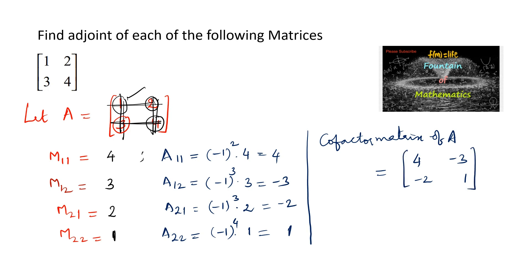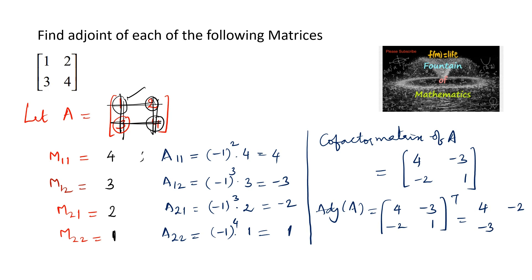Now we know that the adjoint of a matrix is the transpose of the cofactor matrix. So we take [4, -3, -2, 1] and transpose it to get [4, -2, -3, 1]. Hence the adjoint of the 2 by 2 matrix is [4, -2, -3, 1].